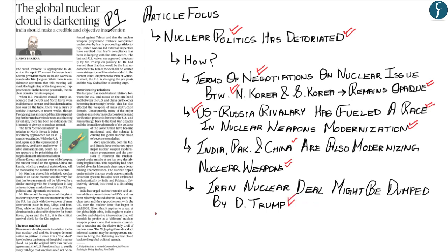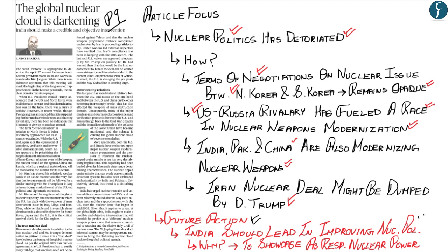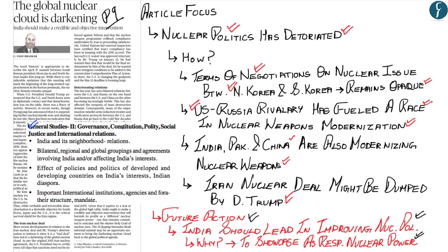The author recommends that India should make a credible intervention in improving international nuclear politics, as this would allow India to showcase itself as a responsible nuclear power. For UPSC mains, this article is relevant in GS Paper 2 in the international relations section, specifically the effect of policies of developed and developing countries on India's interests.